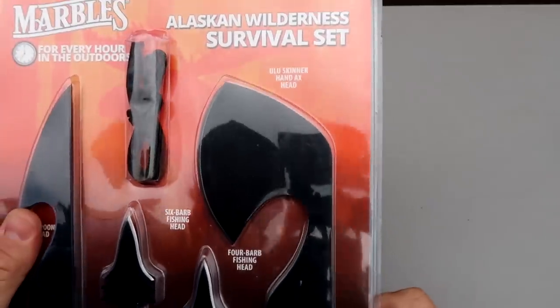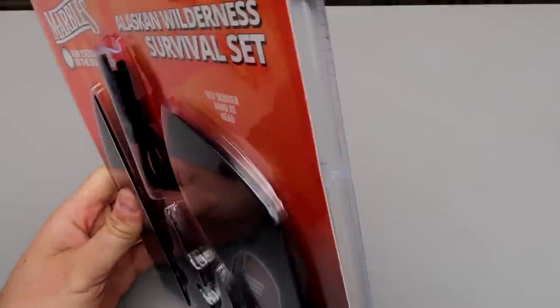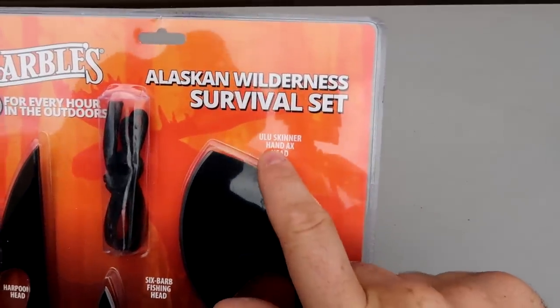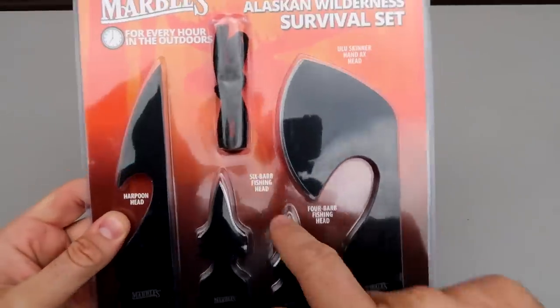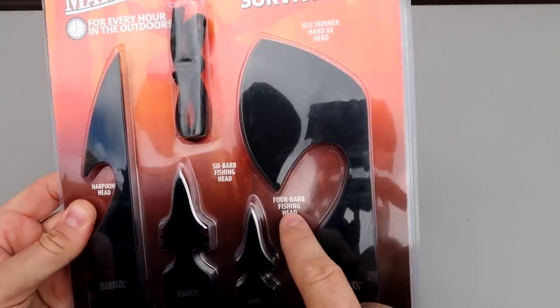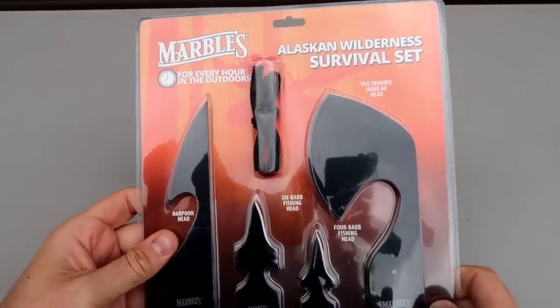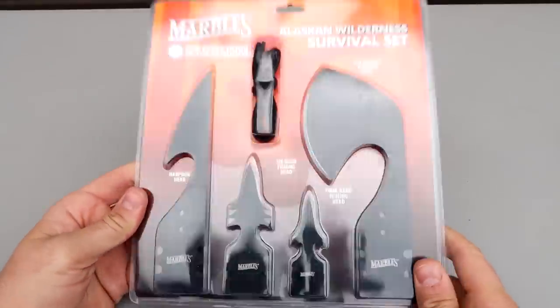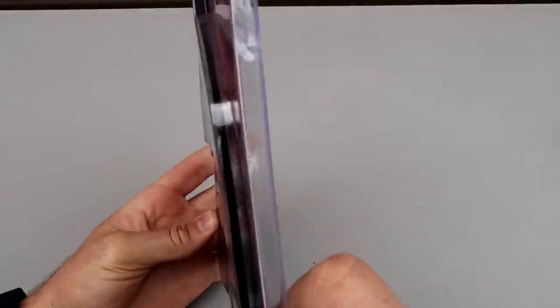But that one is like a little hatchet spear. That is one of a kind for sure. It tells you what it's for: skinner head, ox head. This one harpoon head and fishing head and for fishing as well. That is cool set for sure. I thought it's very unique showing it to you guys, and it just seems to be pretty thick blades too.